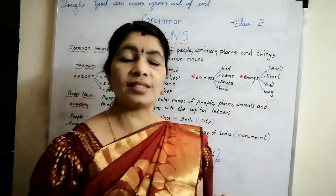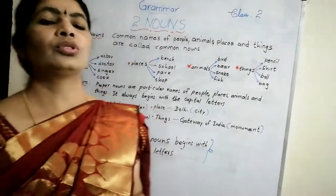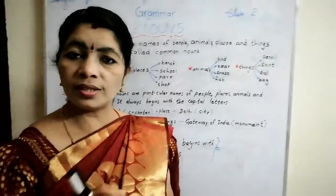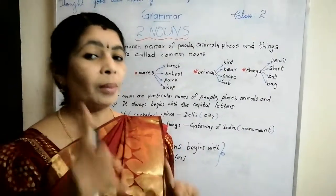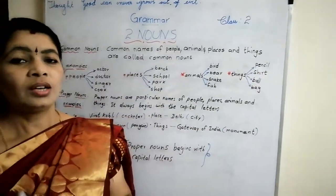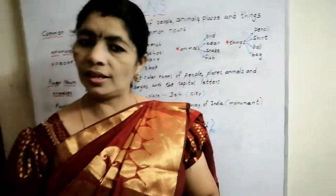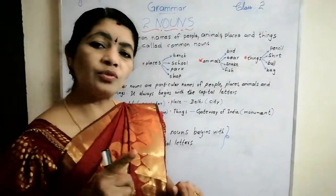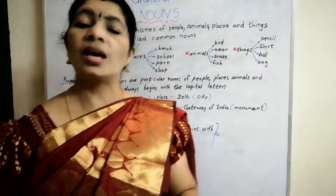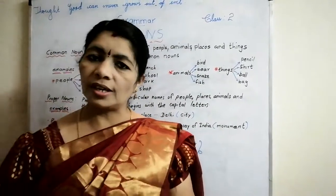So what are the things we learned in Chapter 2? In Chapter 2 we learned types of nouns: common nouns and proper nouns. A common noun is a name of a person, place, animal or thing, and we use small letters. In a proper noun we give a particular name for a person, place, animal or thing, and we write capital letters. We can learn more with examples while doing our textbook. Hope you all understand the lesson. Have a nice day.